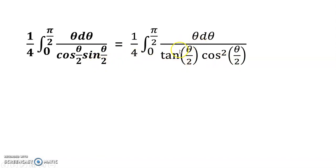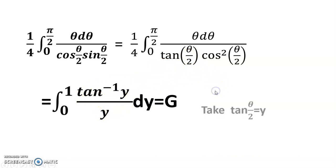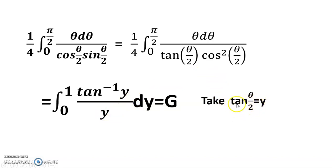So that is why I get tan(theta/2) here, after multiplying numerator and denominator by cos(theta/2). Now taking the substitution tan(theta/2) equals y, so theta equals 2 arctan(y). The derivative of tan(theta/2) with respect to theta is sec-squared(theta/2) times one-half, so d(tan(theta/2)) equals one-half sec-squared(theta/2) d-theta.